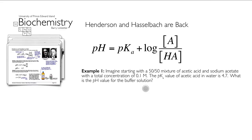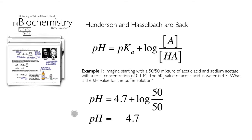A 50/50 mixture of acetic acid and sodium acetate — the acid and basic forms of the same molecule — means the ratio is 1:1. The log of 50 divided by 50 is the log of 1, which is 0. So pH equals pKa. If the pKa is 4.7, a 50/50 mixture gives pH 4.7. You can set the pH just by knowing how much of the acidic and basic form to mix — take a bottle of acetic acid and a bottle of sodium acetate, mix them in the right ratio, and you'll hit your target pH.